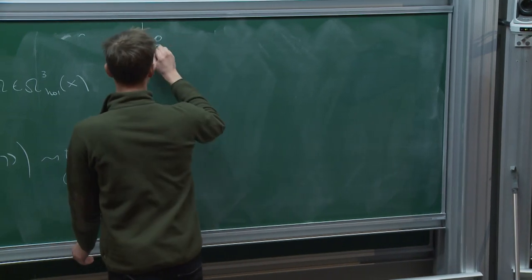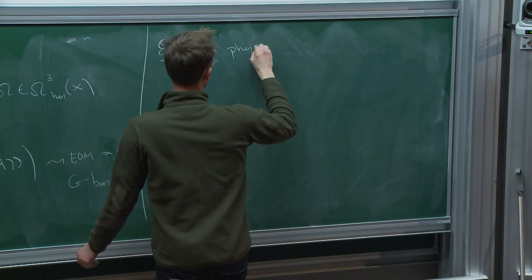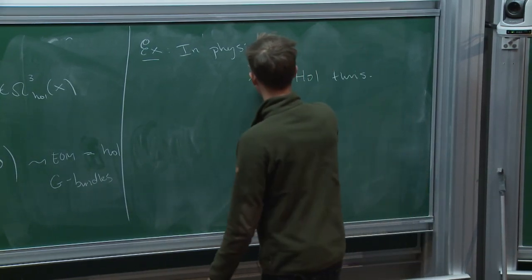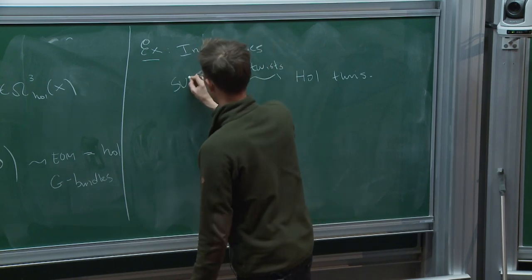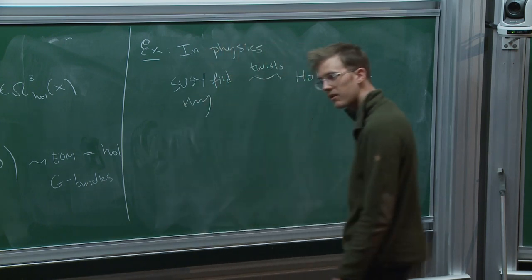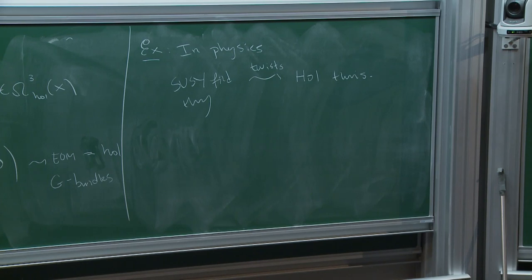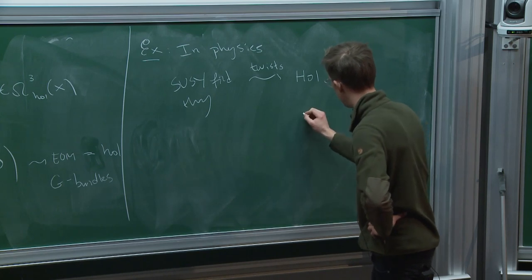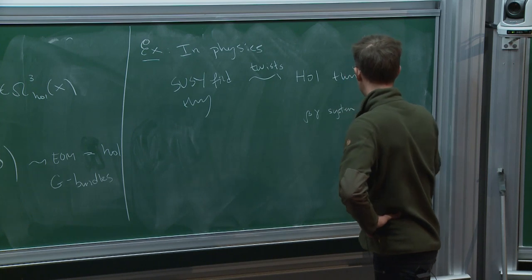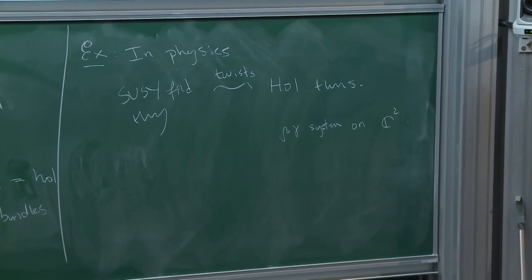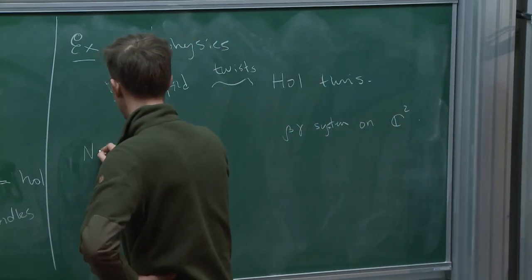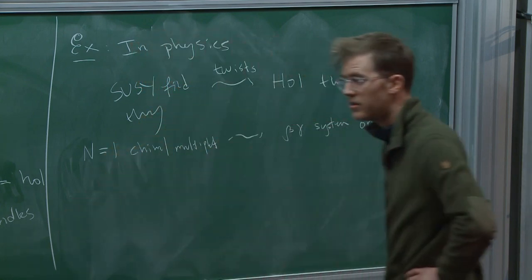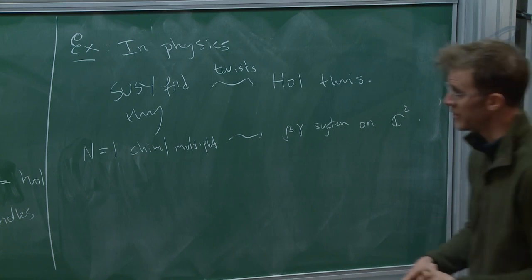There's a slew of examples in physics, and many will come up during the talks this week. In physics, holomorphic field theories generically arise as twists of many supersymmetric field theories — this is a generic fact for any supersymmetric field theory. Owen actually did an example of this: the beta-gamma system he talked about on C², which came from a really simple supersymmetric theory, namely N=1 chiral multiplet, free chiral multiplet. The example I'll focus on today also arises in this way.